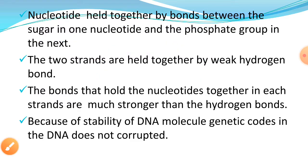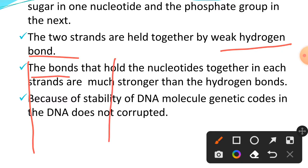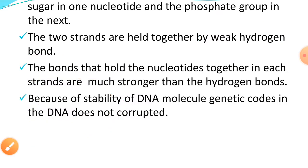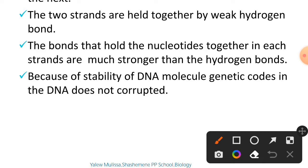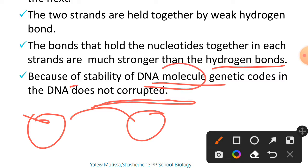The two strands are held together by weak hydrogen bonds between the nitrogen bases. The bonds that hold nucleotides together within each strand are much stronger than the hydrogen bonds between strands. Because of the stability of the DNA molecule, the genetic code in DNA does not corrupt.